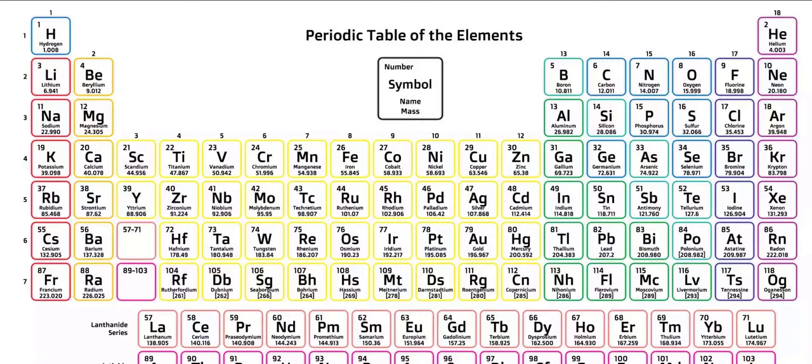Lithium and sodium are members of the same column. The columns are called groups, and all the elements of one group have the same number of valence electrons, and therefore, similar reactivities.